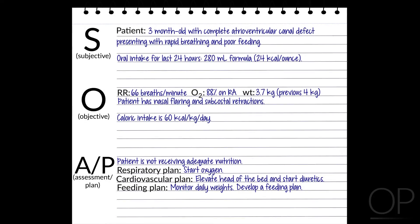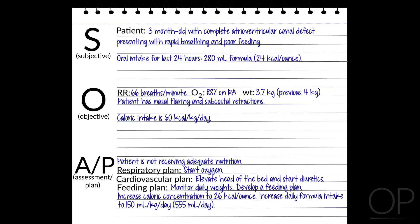Feeding plan. Based on this information, a feeding plan is developed. Increase the calorie concentration to 26 calories per ounce. Increase the 24-hour formula intake to 150 milliliters per kilogram for a total of 555 milliliters. This will increase the calories to 130 calories per kilogram per day. Use a feeding tube as needed to reach nutritional goals.